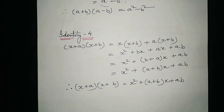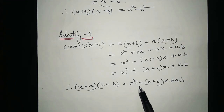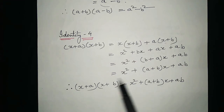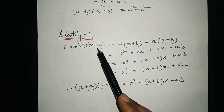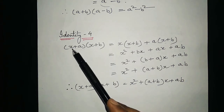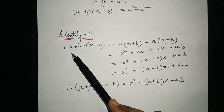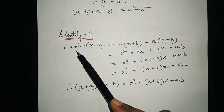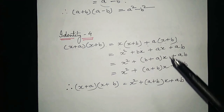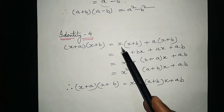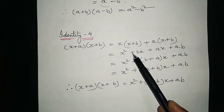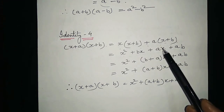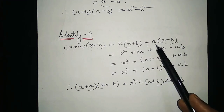Now see identity 4. Identity 4 is: x plus a into x plus b is equal to x squared plus (a plus b) multiplied by x plus ab. To prove this identity, we write x plus a into x plus b. We multiply x by x plus b, then plus a multiplied by x plus b. Multiplying: x into x gives x squared, plus x into b gives bx, plus a into x gives ax, plus a into b gives ab.